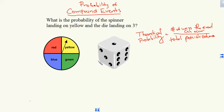In this video, we're going to talk about finding the probability of compound events. So we are going to be measuring the chance of two or more events happening. For example, what is the probability of the spinner landing on yellow and the die landing on three?